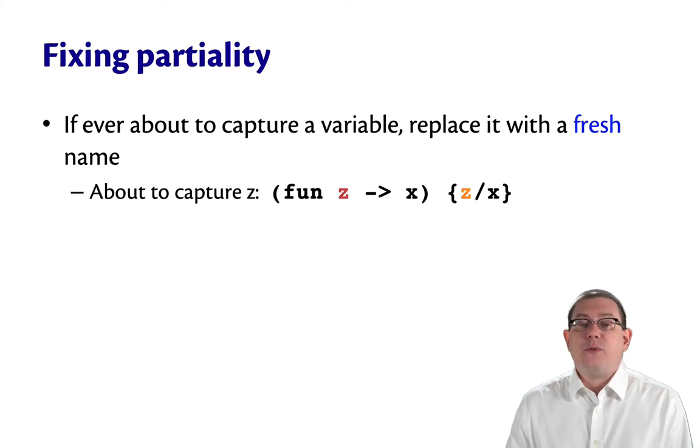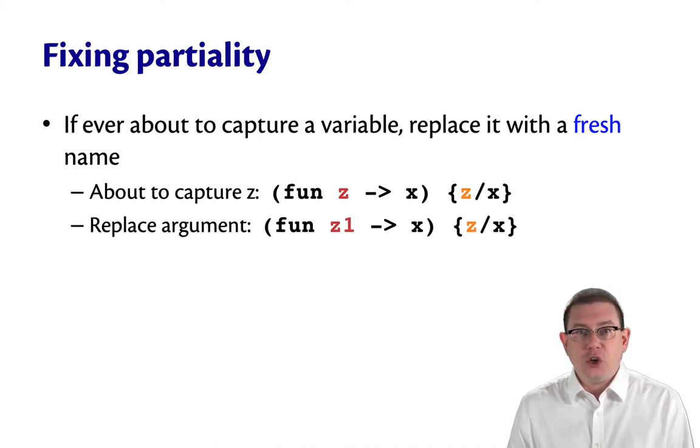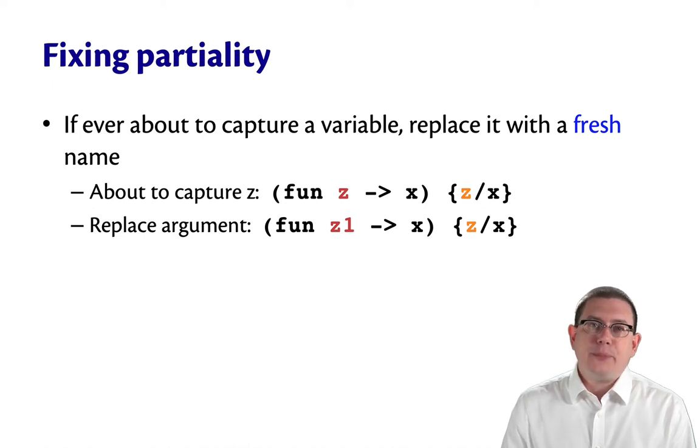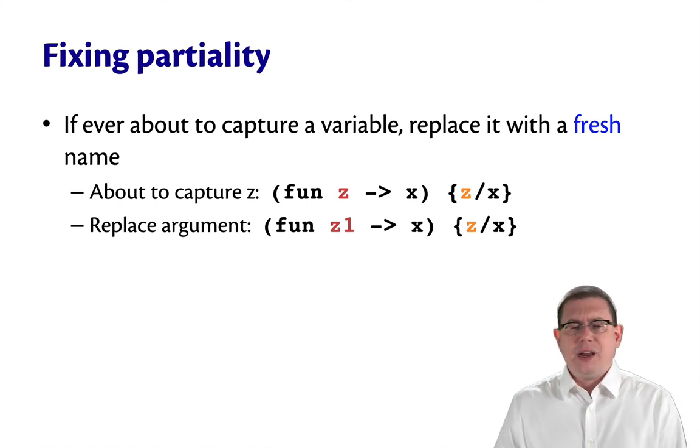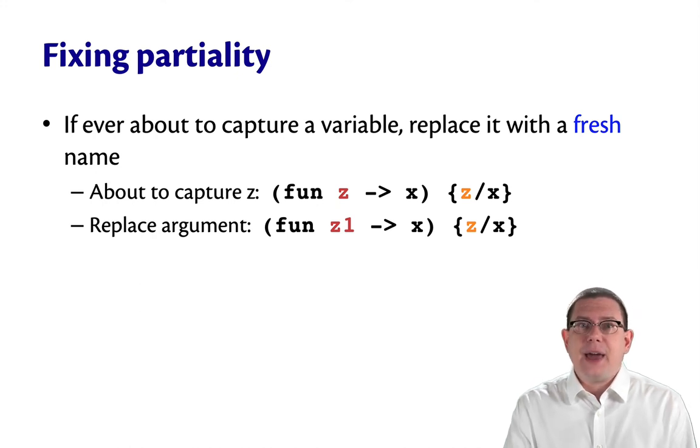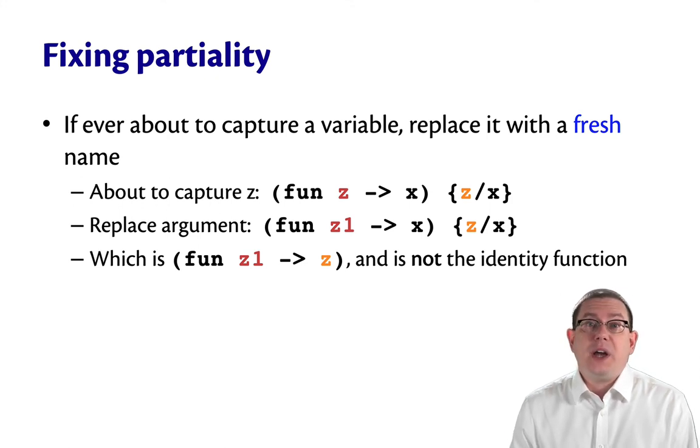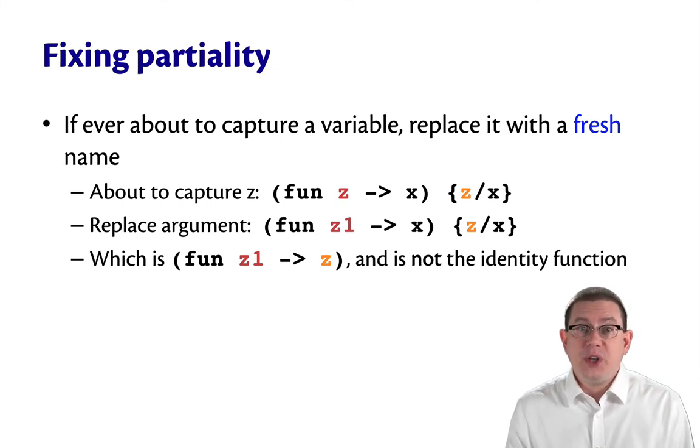So in our example with z before, if we're about to capture z as we were here with the red and the orange z, what we can do is change the argument name. Because the capture is about to occur, we'll just change the argument name z for this function to something that's not used anywhere else. Here I've picked z1. Now it's safe. I've satisfied that precondition. And I can go ahead and do the substitution inside the body of replacing the orange z for x. That gives me the function fun z1 arrow z, which is not the identity function. So I'm no longer getting the wrong result from doing the substitution.